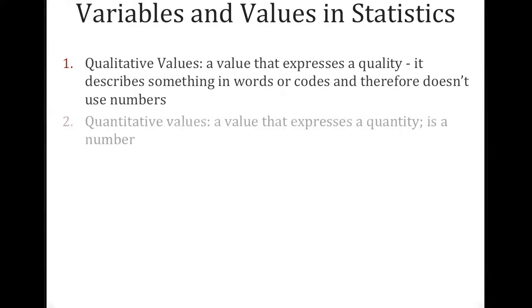So the opposite of this would be quantitative values, which has the word quantity in it. It's a number, height, weight, age. These are all numbers. We call them quantitative values.